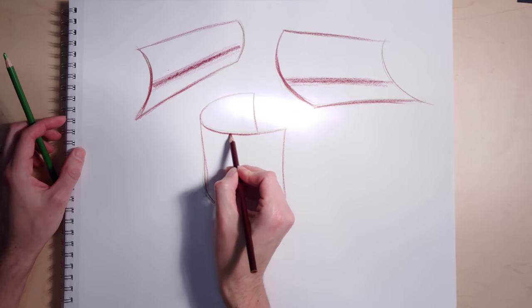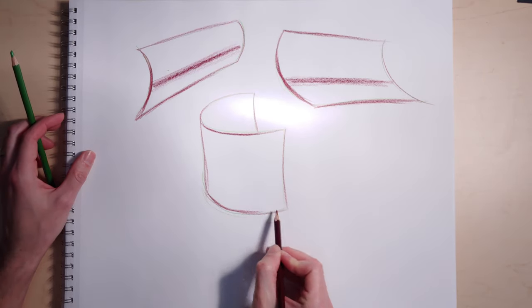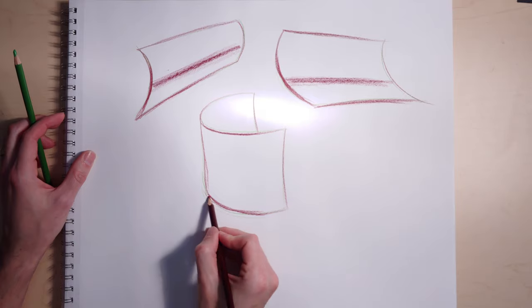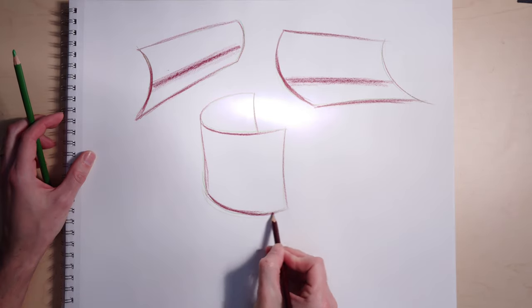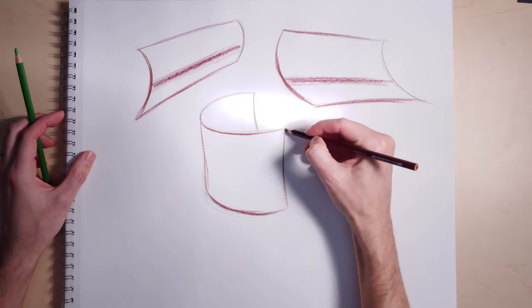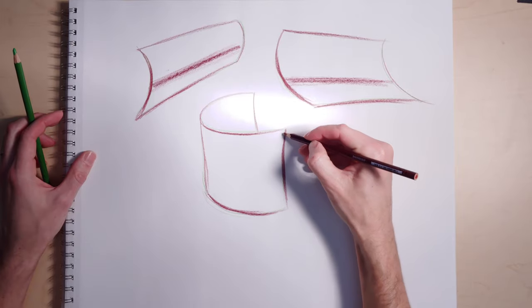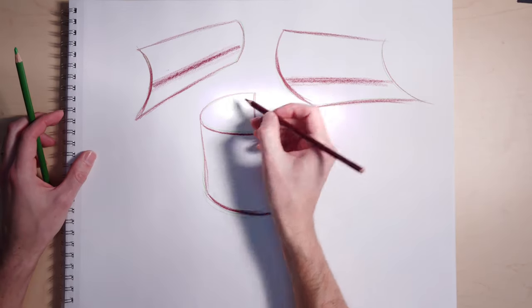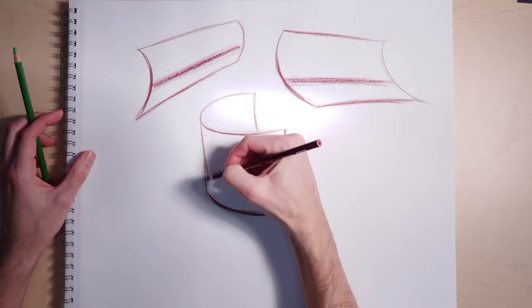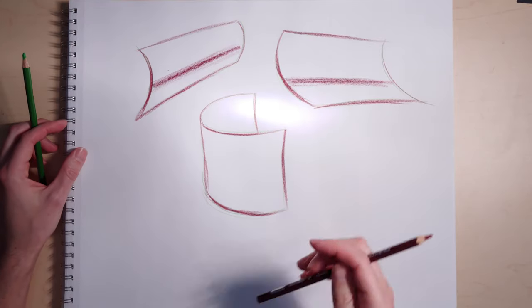The other thing you can do is play around with which side overlaps. Notice on this sort of C-shaped arc that the back goes behind the other one. I'm not even really drawing through the form. That's a really cheap way to buy a bunch of depth.